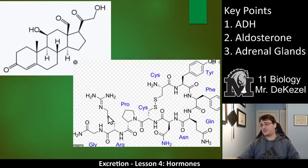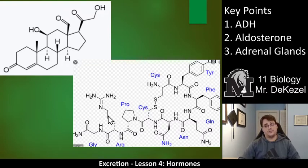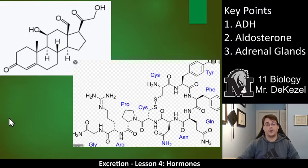These are the structures of ADH and aldosterone. Don't worry about them — just know that they are really large molecules. A lot of hormones are, and this is kind of what they look like.